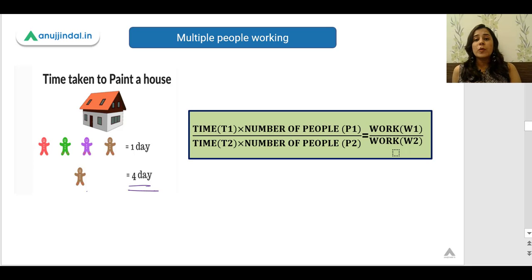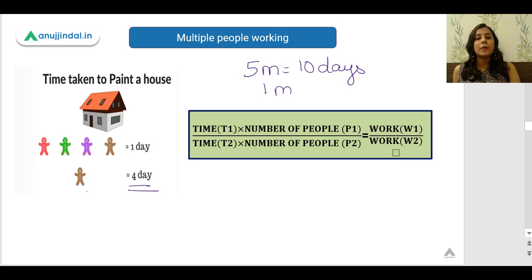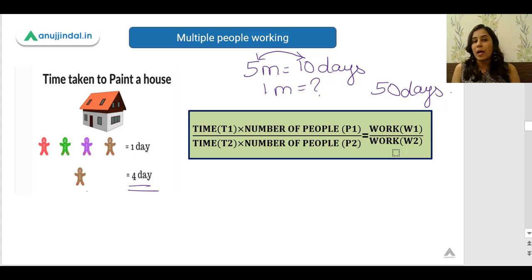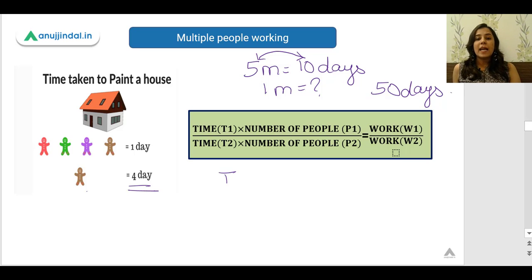For example, if there are five men who can complete a particular job in ten days and you are asked what is the time taken by one man, all you have to do is multiply five by ten and you get the answer: fifty days. So one man is going to take fifty days to complete that job. Don't make the mistake of dividing — you must multiply to find the time taken by one laborer.